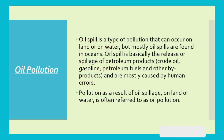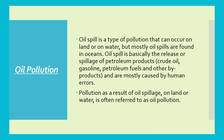Oil spill is a type of pollution that can occur on land or in water, but mostly oil spills are found in oceans. Oil spill is basically the release or spillage of petroleum products, and it is mostly caused by human errors. The big tankers are in transportation in oceans, and the main cause of spillage is human errors and anthropogenic activities.